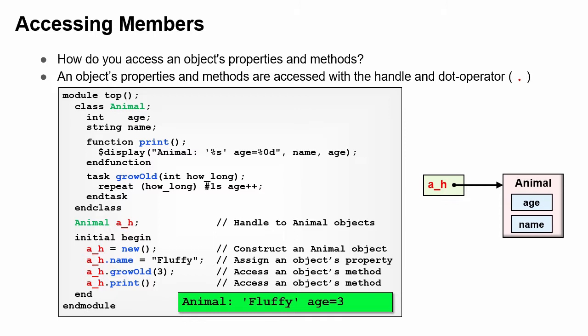Note these are dynamic references to the objects, not Verilog static references. If you change the handle a to point to another object, you will see different properties.